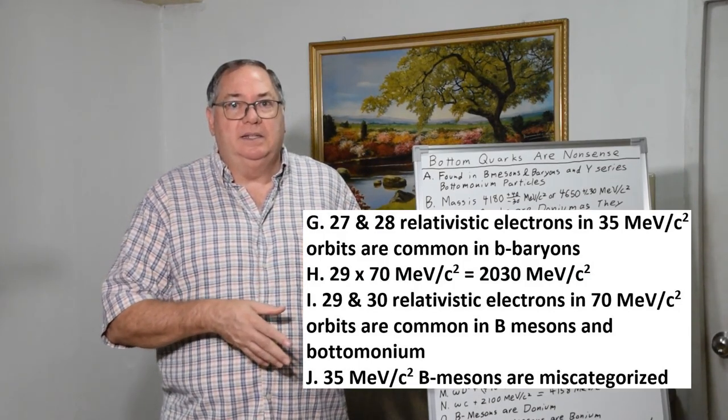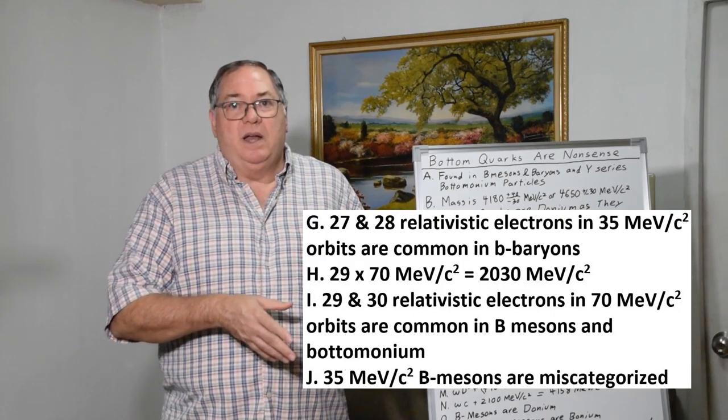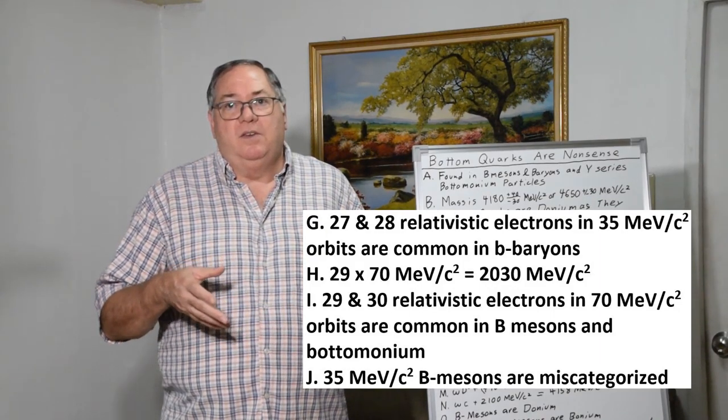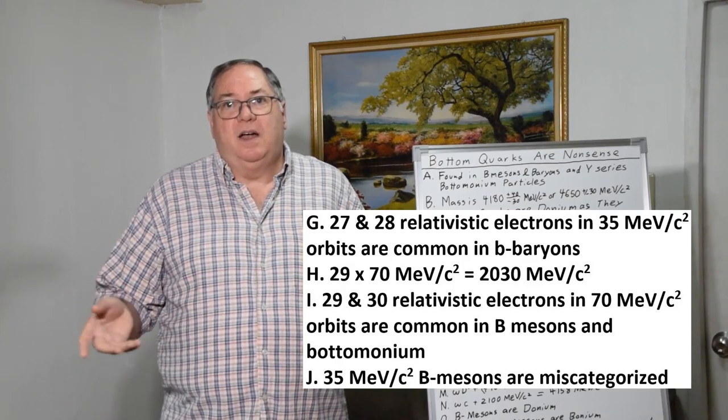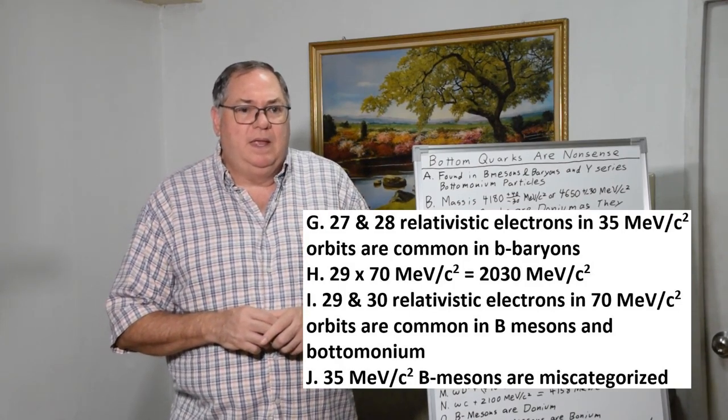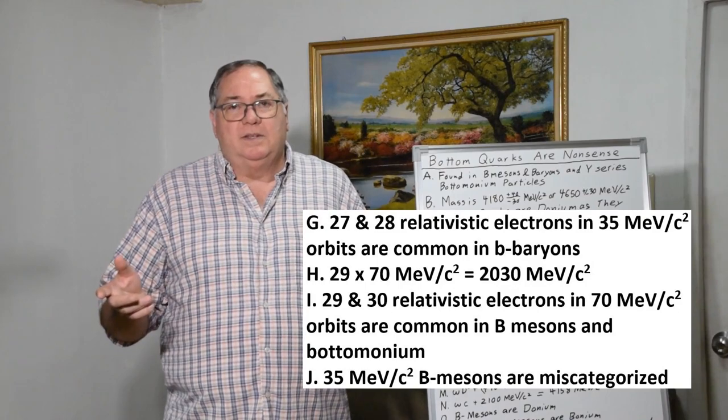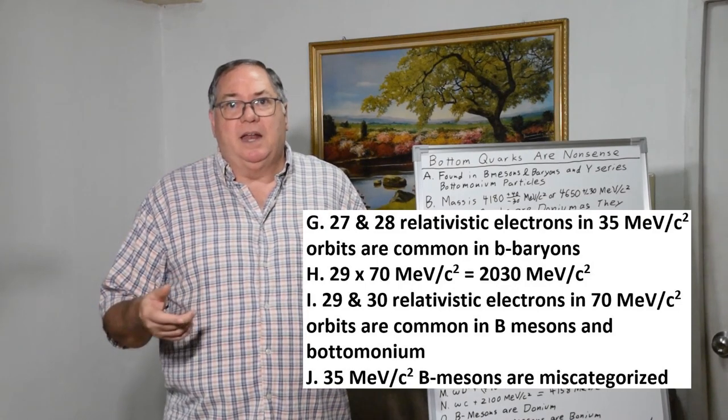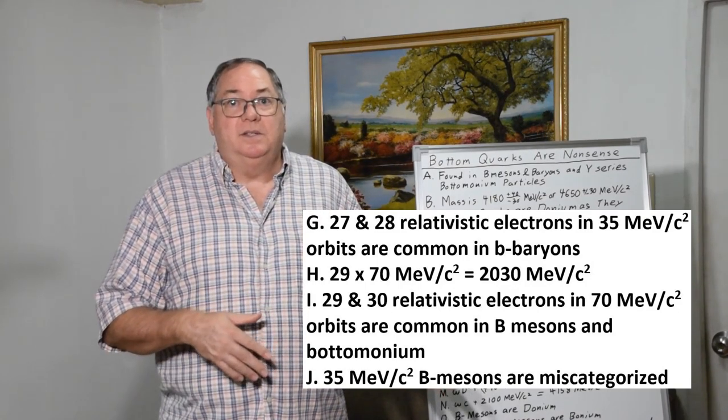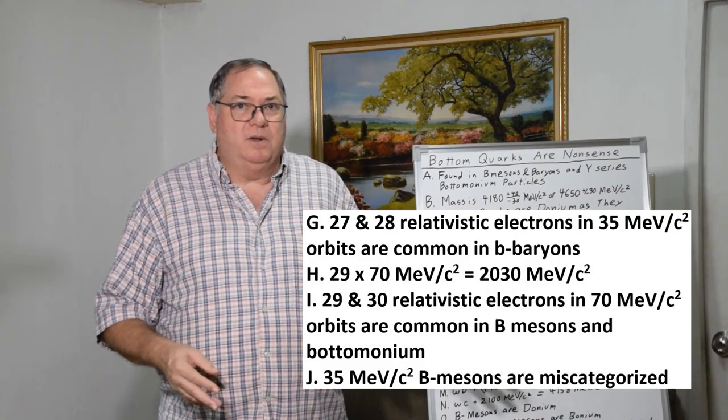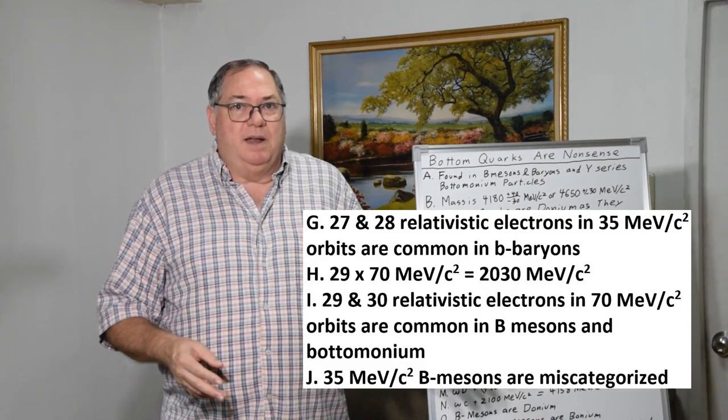The charm baryons are lower energy orbits while the charm mesons are higher energy orbits. So some of the charm mesons are miscategorized as being something else, which is why there's a whole bunch of particles that don't fit the standard model.